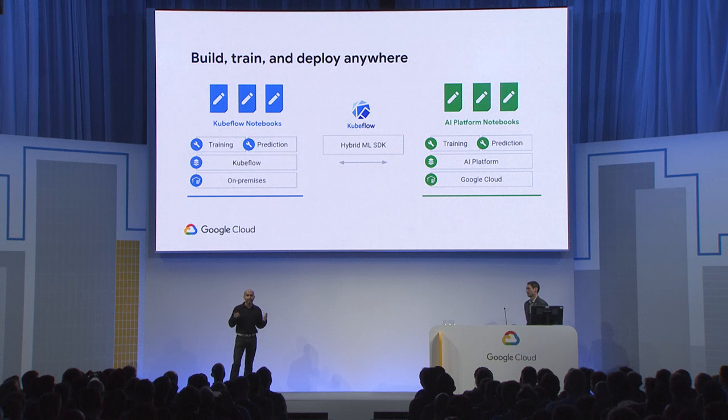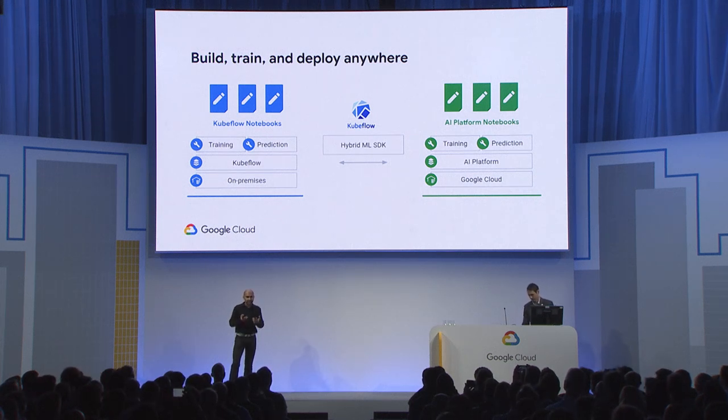Now, how do you build, train, and deploy using this AI infrastructure? Google is working on democratizing AI infrastructure. One key example is Kubeflow Pipelines — an open-source, no-lock-in hybrid solution that lets you take production workloads from on-prem to cloud for bursty deep learning training workloads. It's the same code you deploy on-prem that you then take to cloud. You start with Kubeflow notebooks on-prem and use AI Platform notebooks in the cloud, connected by the hybrid ML SDK.